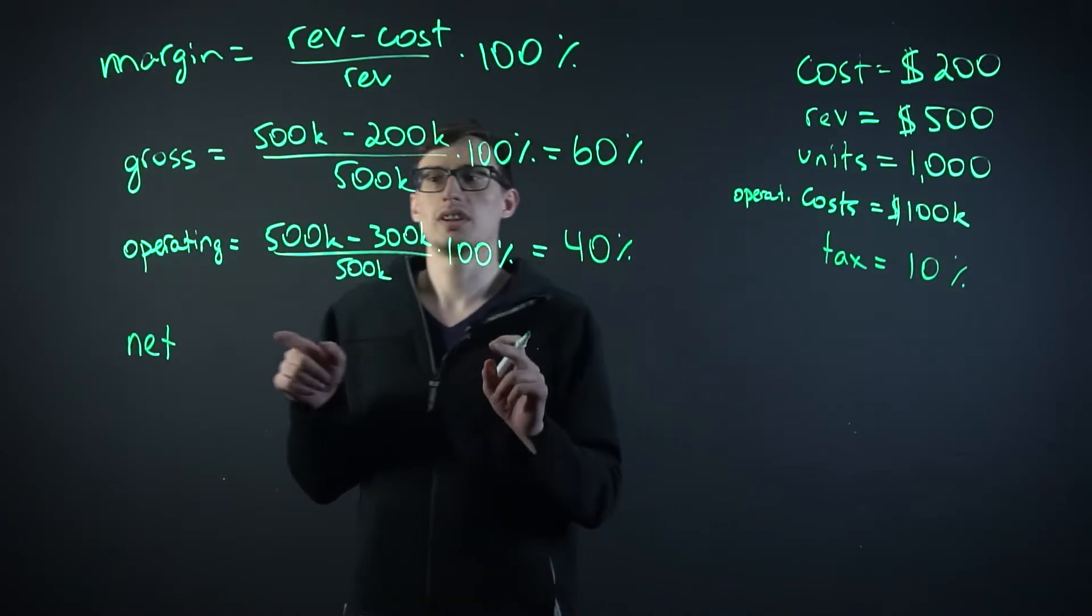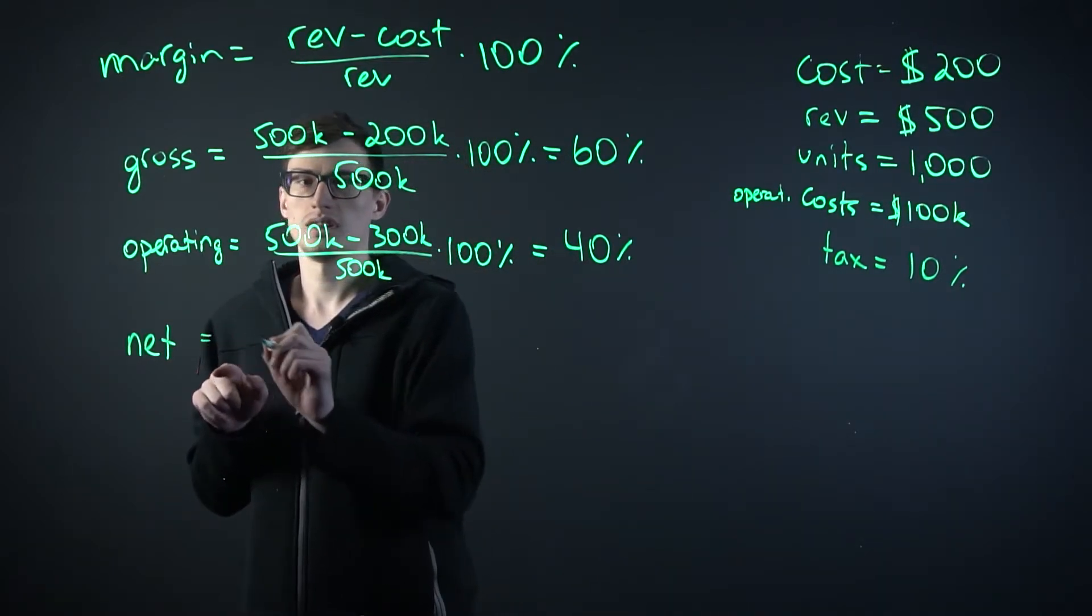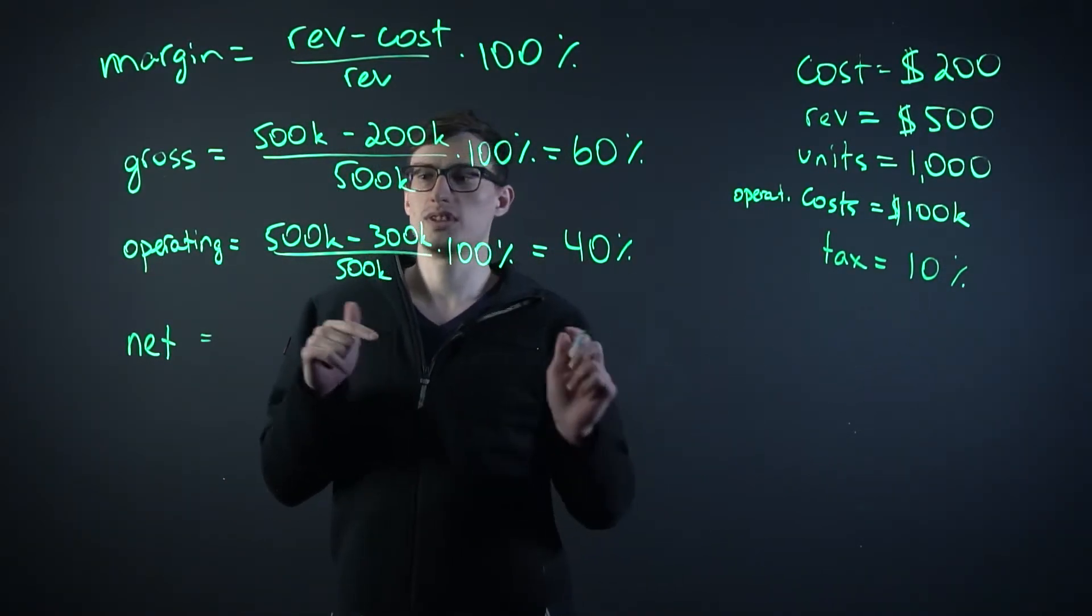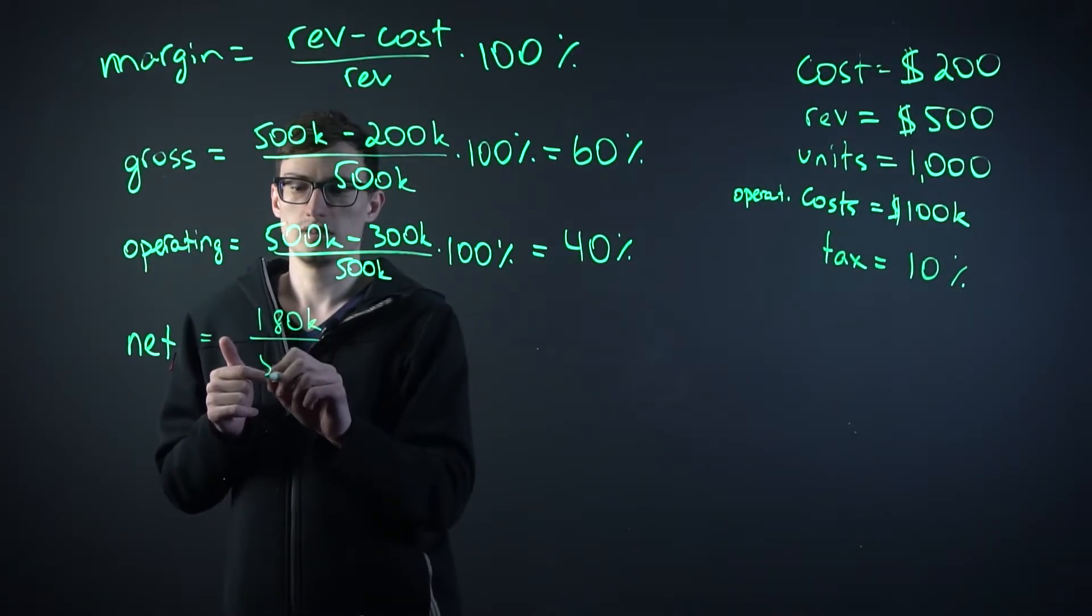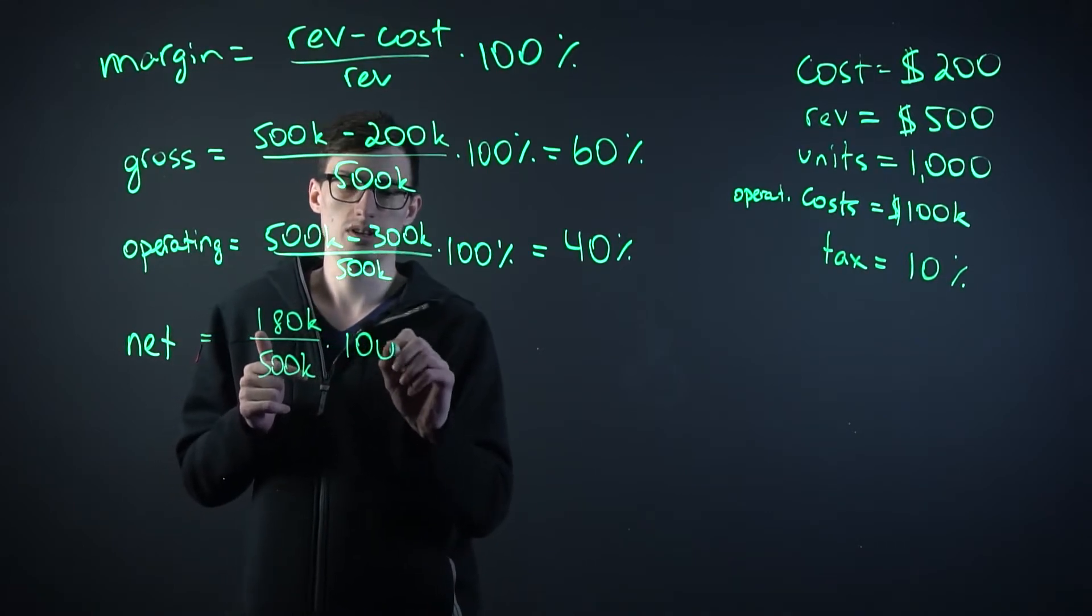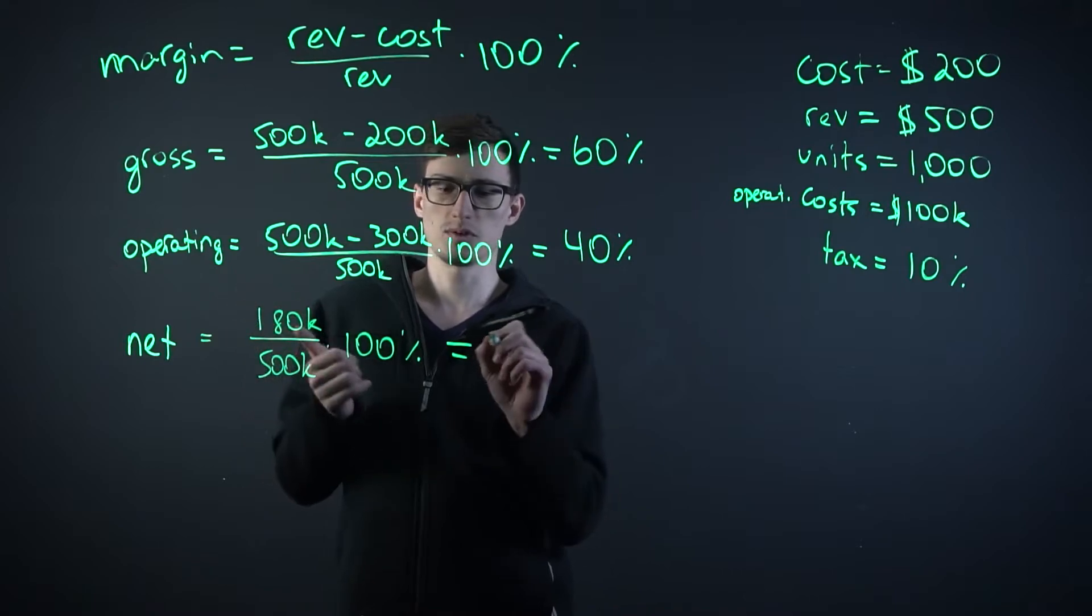So now here we had $200,000 left over. But now $200,000 minus 10% is $180,000 divided by $500,000 times 100%. It's 36%.